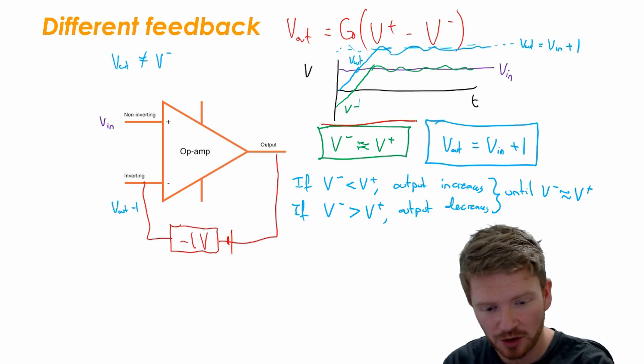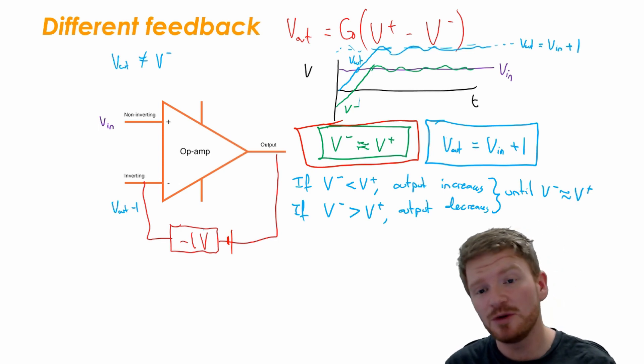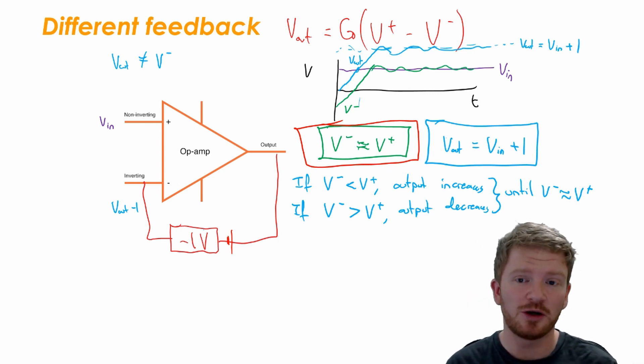If it needs to increase its output it will increase its output, if it needs to decrease its output it will decrease its output. The op-amp will change how it needs to until they are the same.